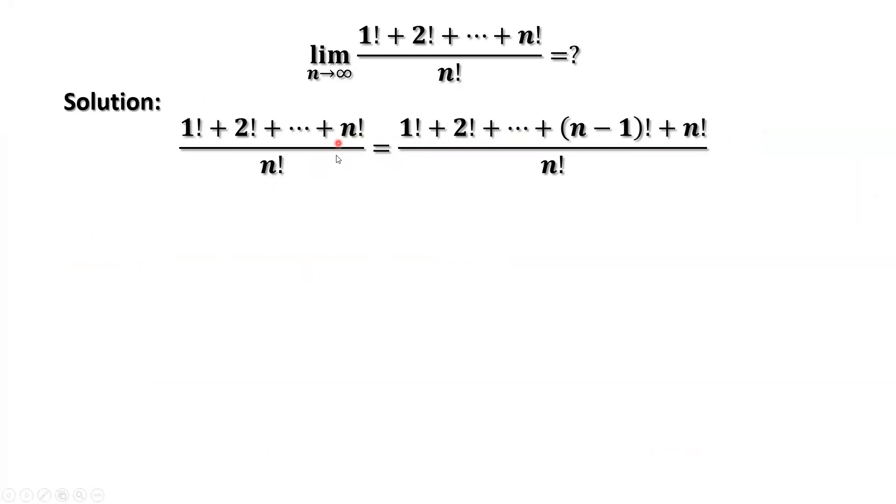This is the given sequence. If we rewrite the numerator as two groups cutting from here, n factorial divided by n factorial equals 1. Then we have the remaining part.